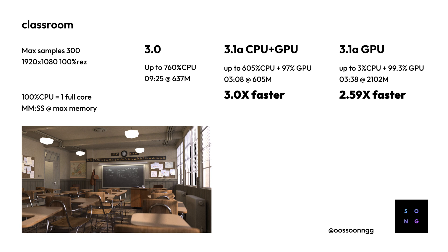Next is the classroom scene at 300 max samples, full HD. In Blender 3.0, it used 760% CPU and finished in 9 minutes 25 seconds with 637 MB of memory. With CPU+GPU in 3.1, using about 6 full cores and 97% GPU, it finished in 3 minutes 8 seconds with 605 MB — exactly 3 times faster. GPU-only used under 3% CPU and 99.3% GPU, finishing in 3 minutes 38 seconds with 2,102 MB — about 2.6 times faster.